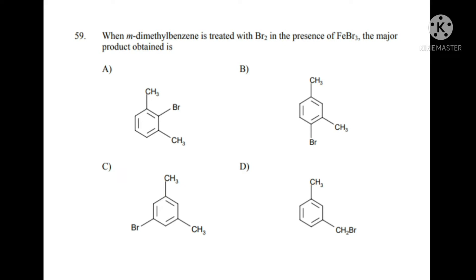We will keep options A and B, and put option C aside because it corresponds to meta-position substitution, which is not favored by ortho/para directing groups. Option D involves the reagent bromine with FeBr3 — that is electrophilic aromatic substitution.